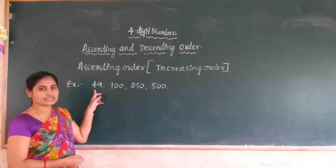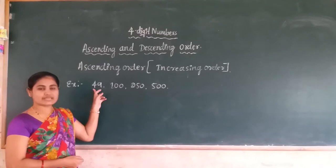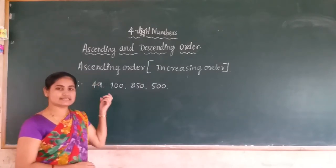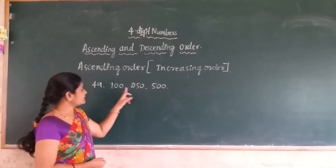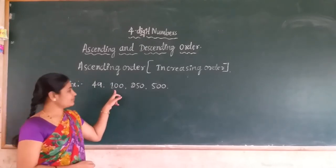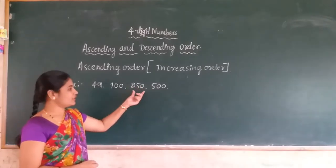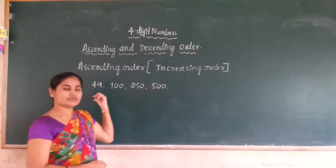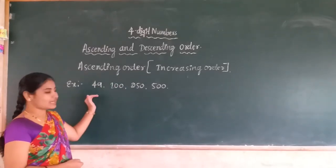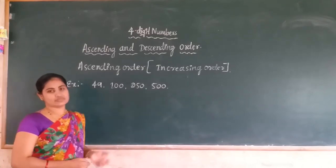First I write 49. 49 has only two digits compared to the other numbers, therefore it is the smallest number — that is why I write the smallest number first. The remaining numbers have only three digits. We compare 100, 250, and 500: the hundreds digits are 1, 2, and 5. Since 1 is the least, 100 is second; 2 is smaller than 5, so 250 is third; and 500 is the greatest. This arrangement, from smallest to biggest, we call ascending or increasing order.